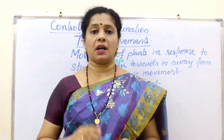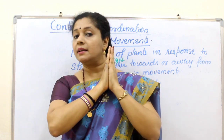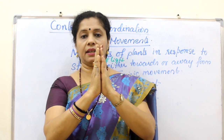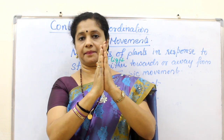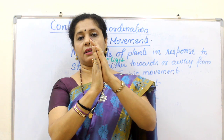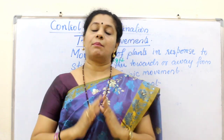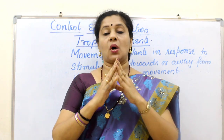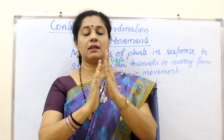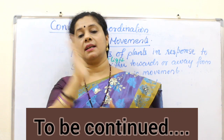This differential growth in phototropism is supported by a plant hormone called auxin. Auxin is a growth hormone. When light falls on one side of the shoot, all the auxin moves to the opposite shaded side. That makes the shaded side grow more, causing the plant to bend towards the light. So auxin is responsible for the bending of shoots towards the light source in positive phototropism.